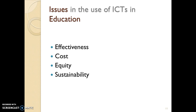The third concern is equity — concerns about whether the use of ICT widens existing divisions drawn along economic, social, cultural, geographic, and gender lines. The concerns are whether use of ICT will remove, lessen, or widen these divisions. The fourth issue could be sustainability — whether a technology is sustainable over time. Sustainability can be of many types: economic sustainability, social sustainability, political sustainability, and others.